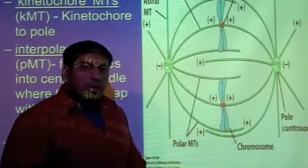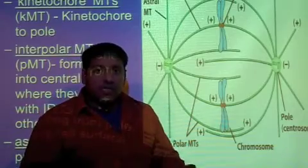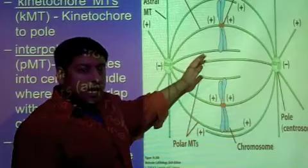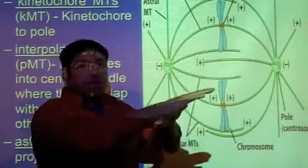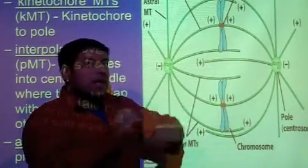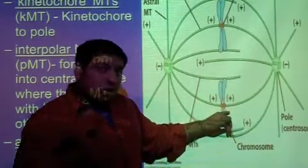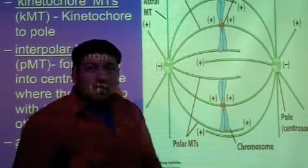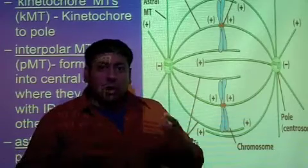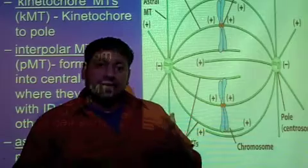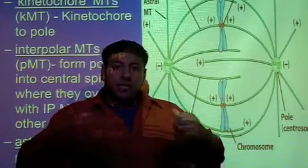The kinetochore microtubules are dynamically unstable. As they are growing from the centrioles, they're growing and shrinking, growing and shrinking, until they finally make contact with the kinetochore. It is the kinetochore microtubules that are responsible for pushing and pulling the chromosomes and ultimately separating the sister chromatids from each other.